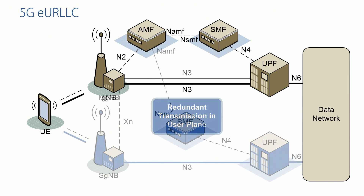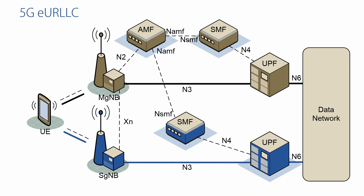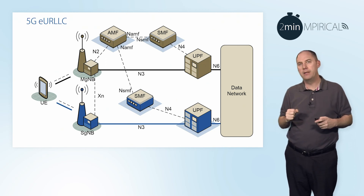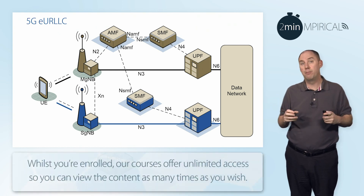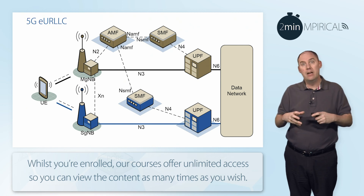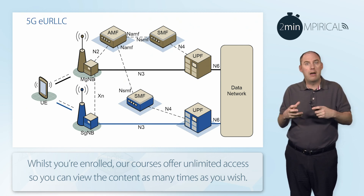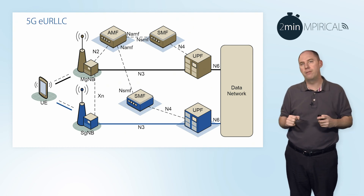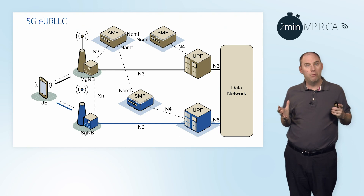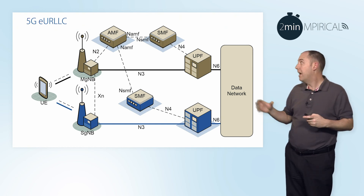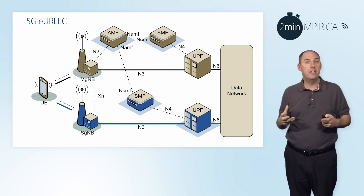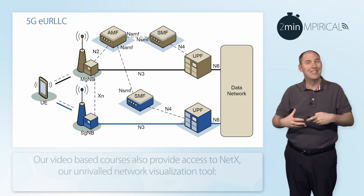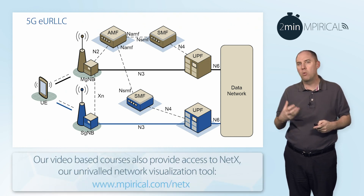It goes even further than that. Using dual connectivity — you can see in brown we've got our master gNodeB, and in blue we've got a secondary gNodeB base station. Assuming the device supports it, we can facilitate our guaranteed bit-rate ultra-reliable low-latency communications across two user planes, giving resilience across the network. They both share the same AMF, but in this example they could use different SMFs and user plane functions. There is a lot of other detail that goes with managing this.